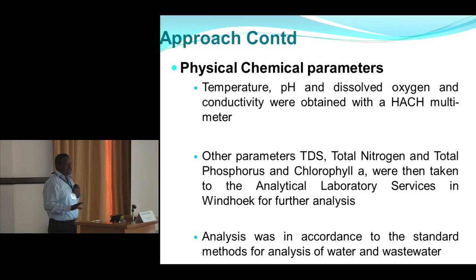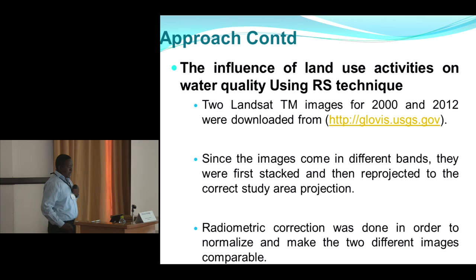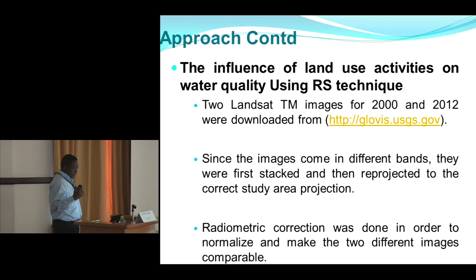Physiochemical parameters were analyzed using standard methods. We had in-situ parameters and those needing lab analysis. For the impact of land use on water quality, we used remote sensing, obtaining images for two different periods — 2000 and 2010–2012 — and carried out the standard processing procedures for remote sensing techniques.